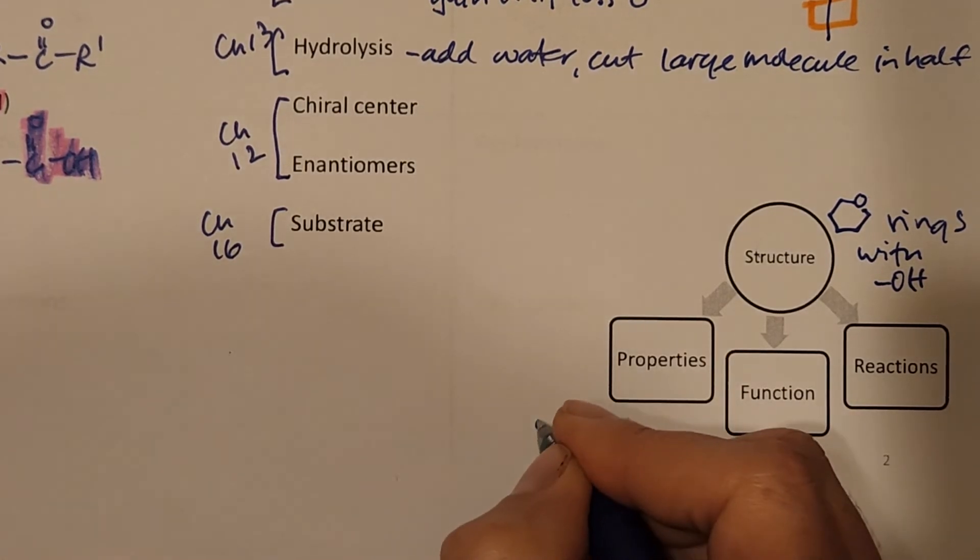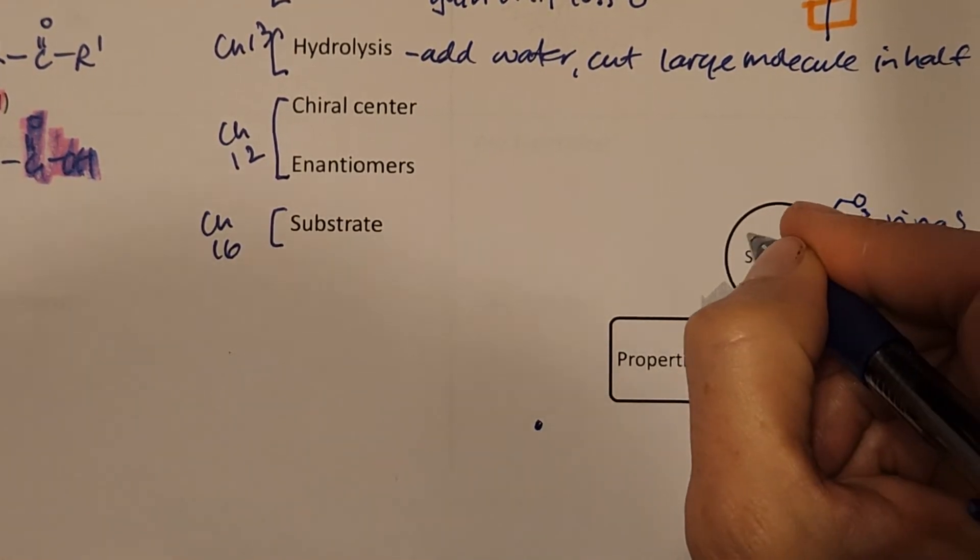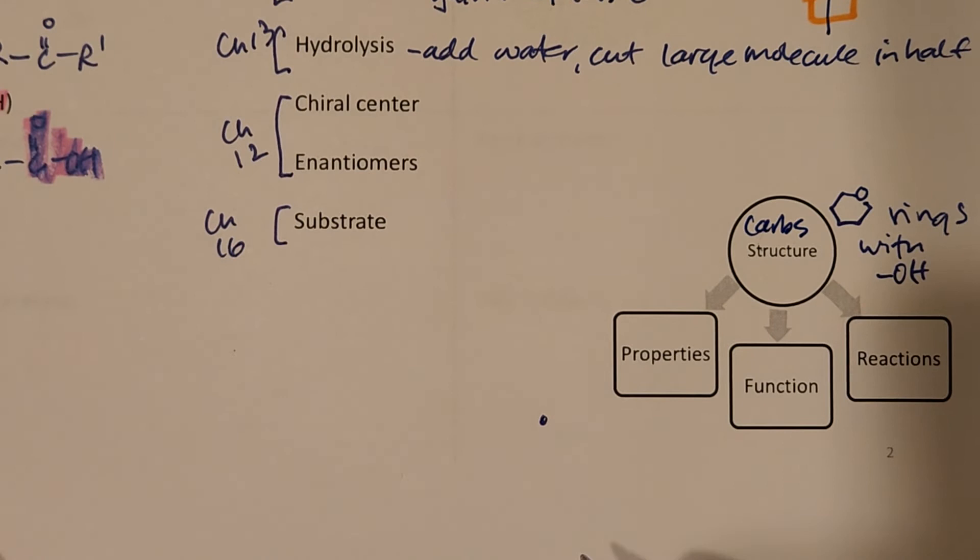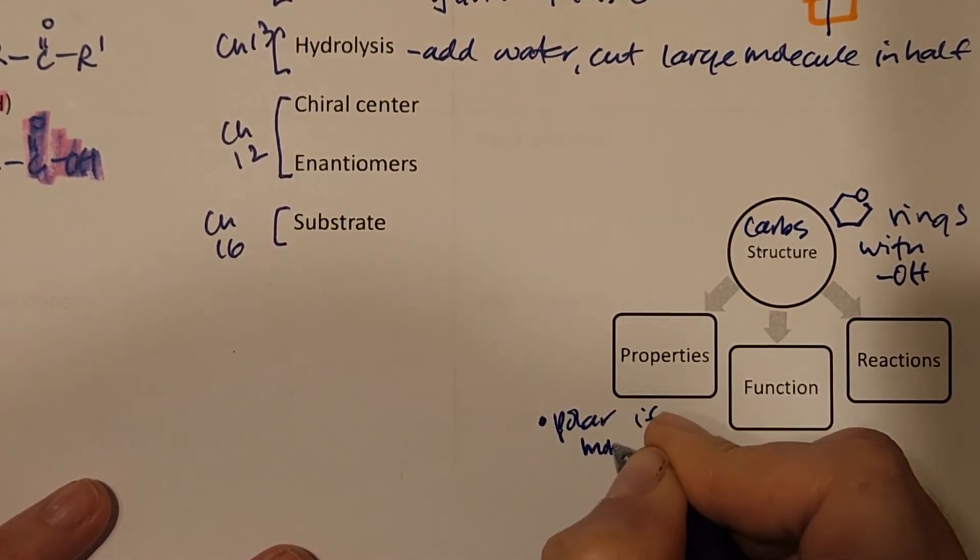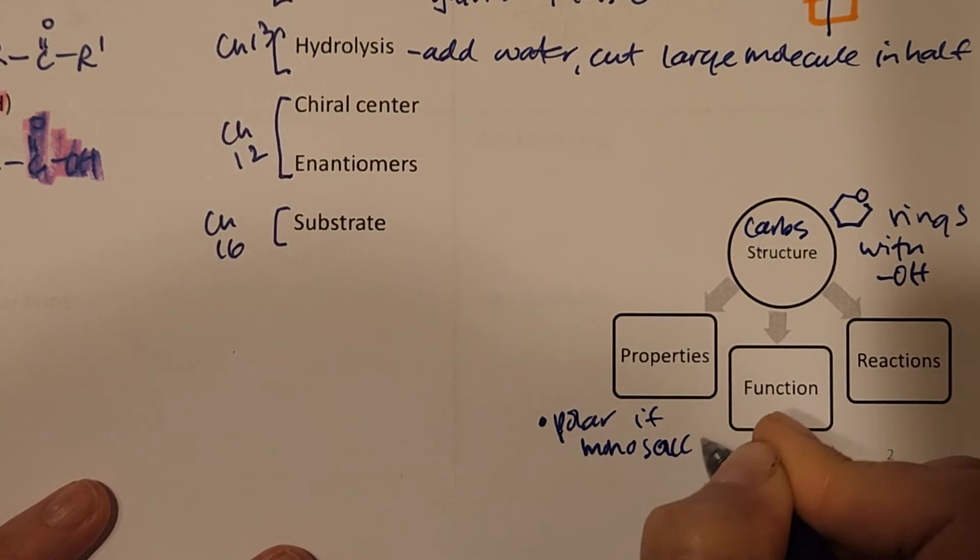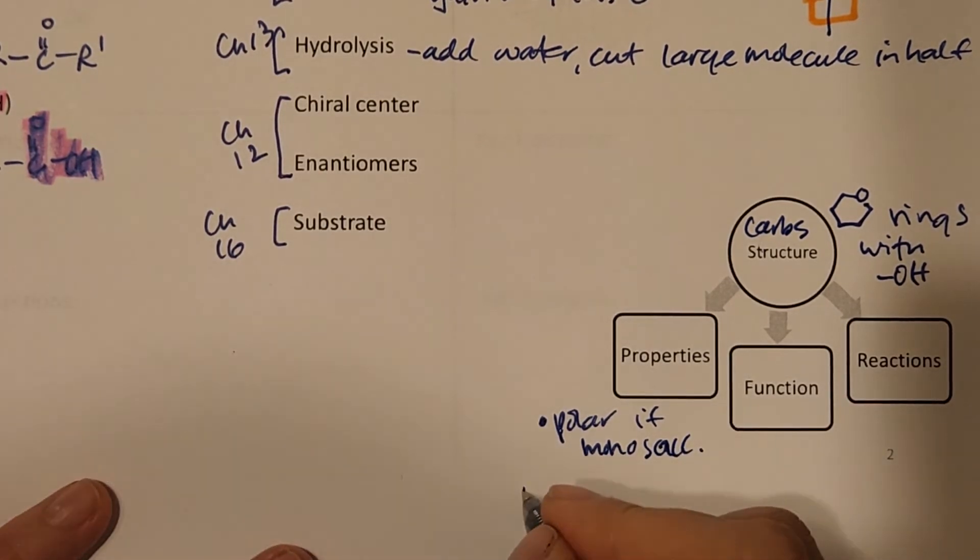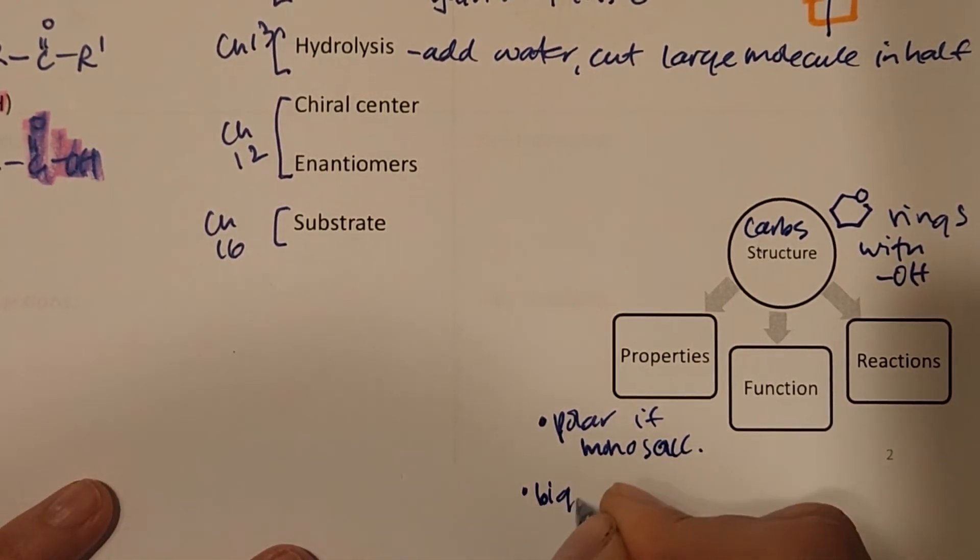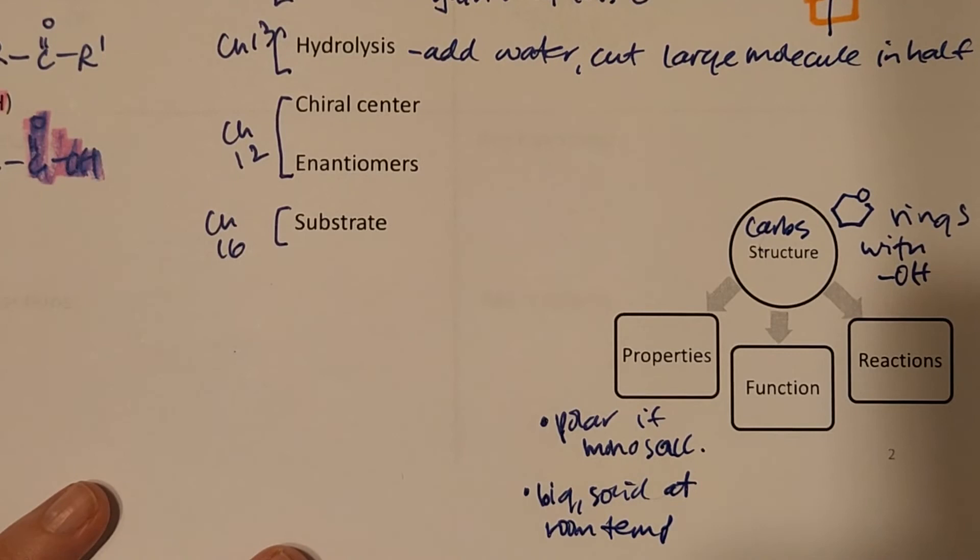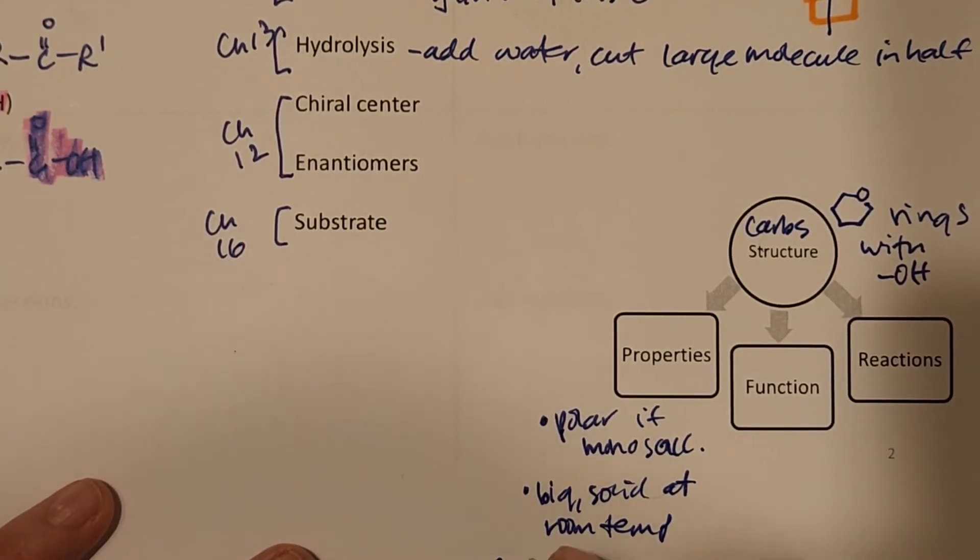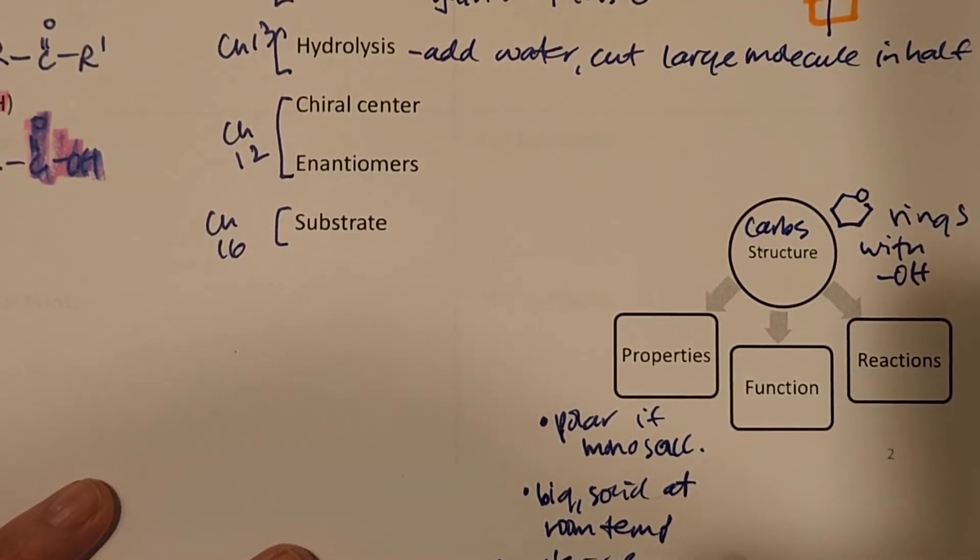As far as properties go, we're going to see that our sugars are carbs. Carbs here is what we're talking about. They're polar. If they are monosaccharides, and mono meant one ring, we're going to see that because they're so big, they're solid at room temperature, and that would be like sugar. And if they're small, they're water soluble.